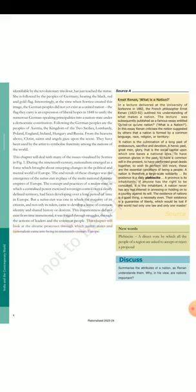Ernst Renan: What is a nation? In a lecture delivered at the University of Sorbonne in 1882, the French philosopher Ernst Renan (1823–92) outlined his understanding of what makes a nation. The lecture was subsequently published as a famous essay entitled 'Qu'est-ce qu'une Nation?' (What is a nation?). In this essay Renan criticizes the notion suggested by others that a nation is formed by a common language, race, religion, or territory. A nation is the culmination of a long past of endeavors, sacrifice and devotion. A heroic past, great men, glory — that is the social capital upon which one bases a national idea.